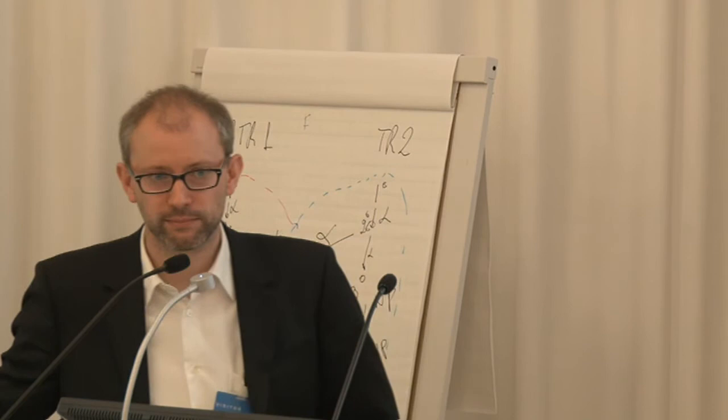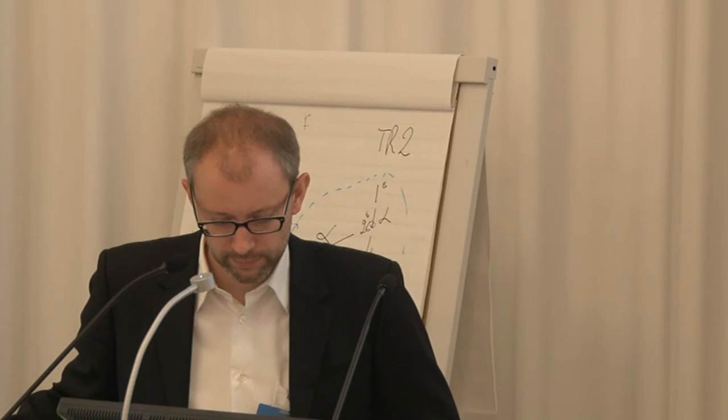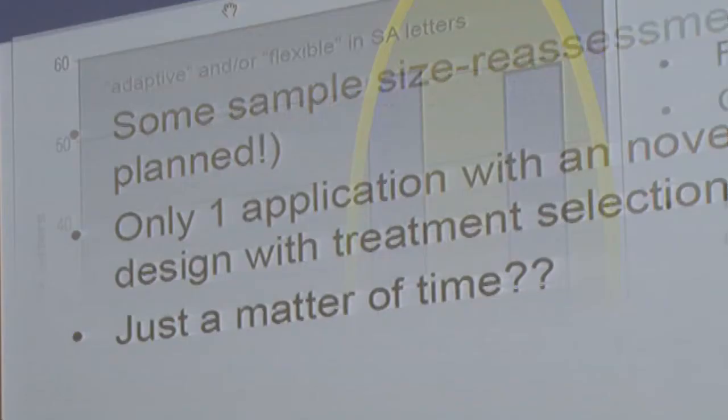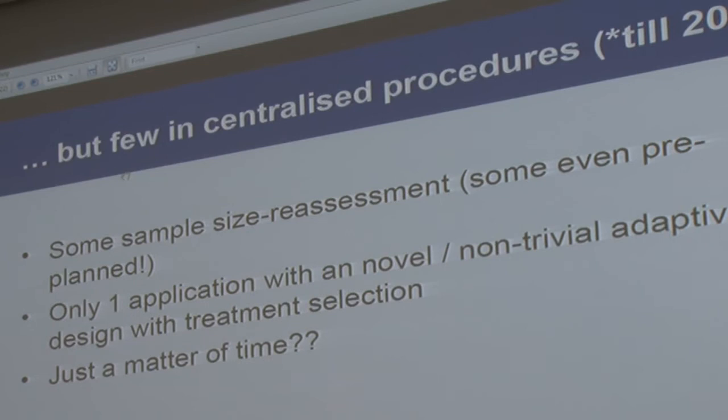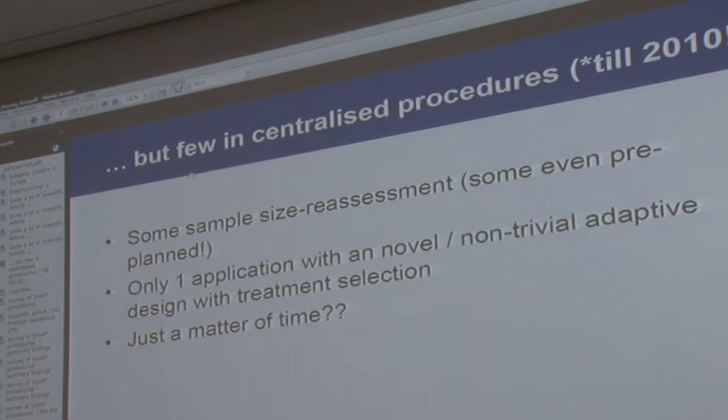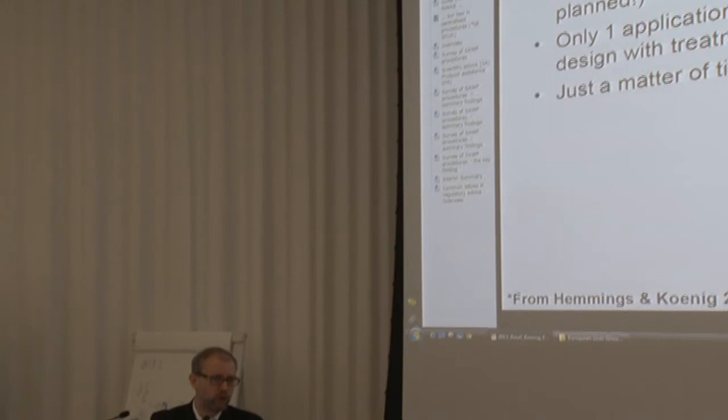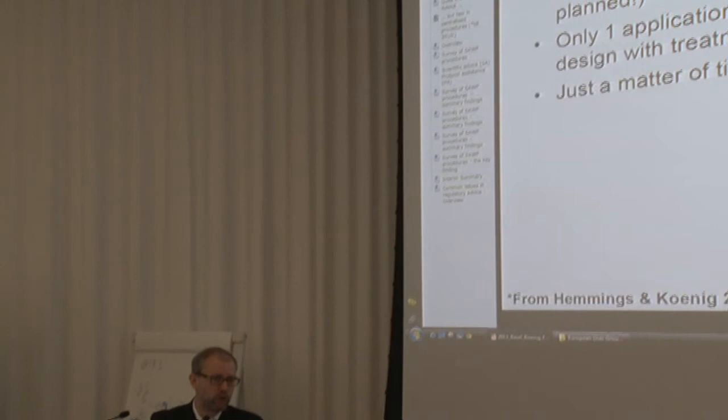Another question: could you clarify what 'centralized procedures' means? In Europe, unlike the United States, you can either go to national authorities (such as in Austria) or to the EMA, where you get approval for all of Europe. For some indications you must use the centralized procedure, but for others you can choose. So the centralized procedure is the regulatory pathway through the EMA.